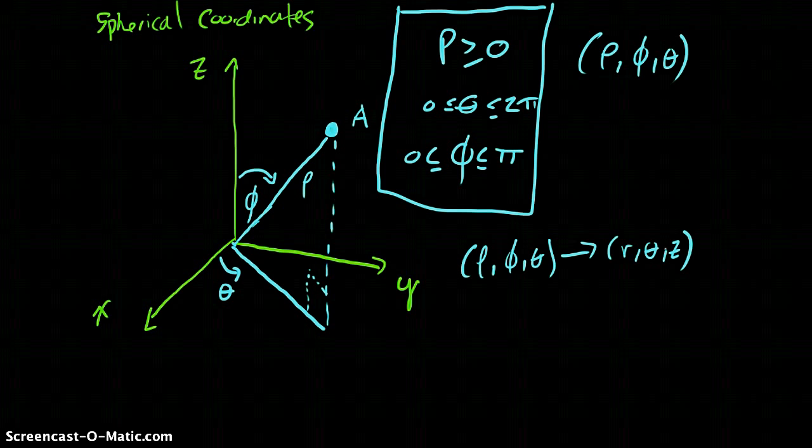Well, we need r, theta, and z. Well, actually, theta is shared between both of these. So actually, we just need to find out what r and z are.